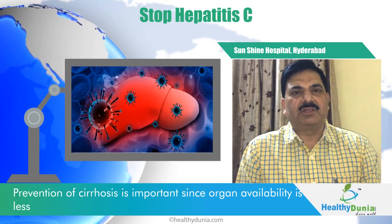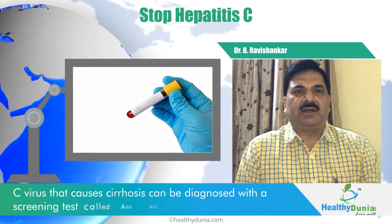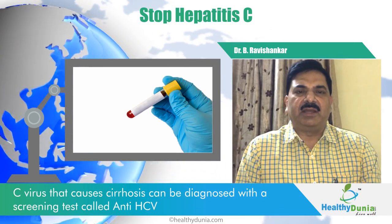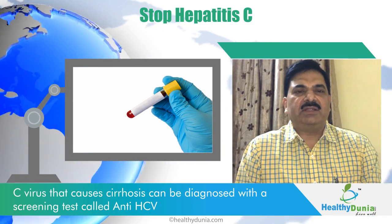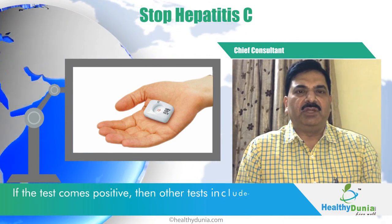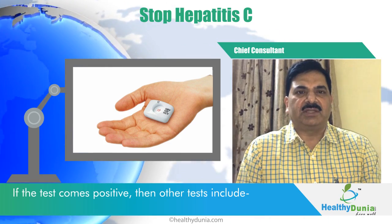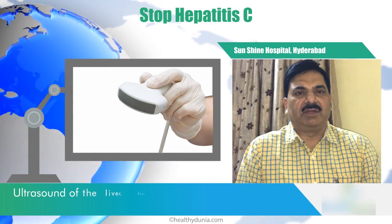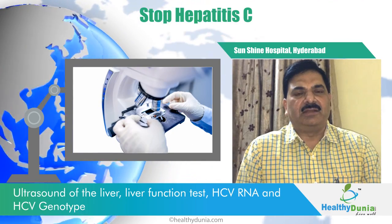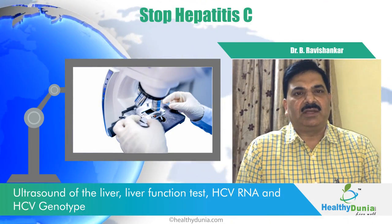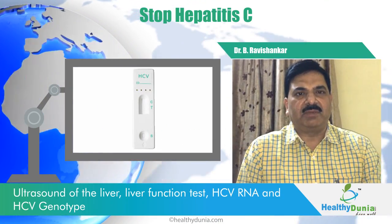How to diagnose the C virus? It is generally identified by a screening test called anti-HCV. Once anti-HCV is positive, we need to go for further testing like ultrasound of the liver, liver function test, and many important tests like HCV RNA and HCV genotyping.